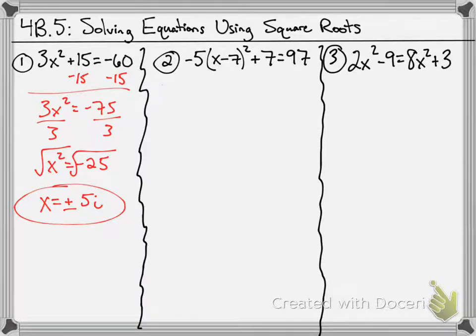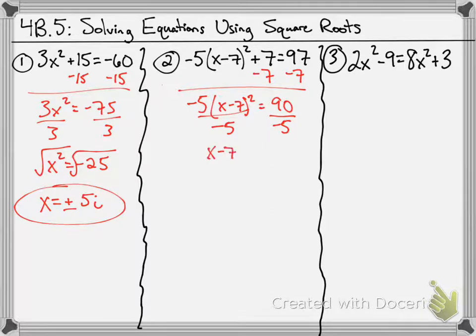The second problem is pretty similar. You'll notice we've got the squared term being surrounded by parentheses. The goal is to get that term that's being squared by itself first, then we'll square root. We're going to subtract 7. We get negative 5 times (x minus 7) squared equals 90. Then, we're going to divide away negative 5 because you cannot distribute it in. The squared prevents you from doing that. You're left with (x minus 7) squared equals negative 18.